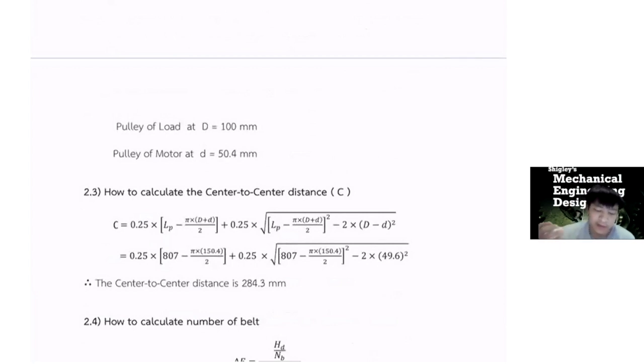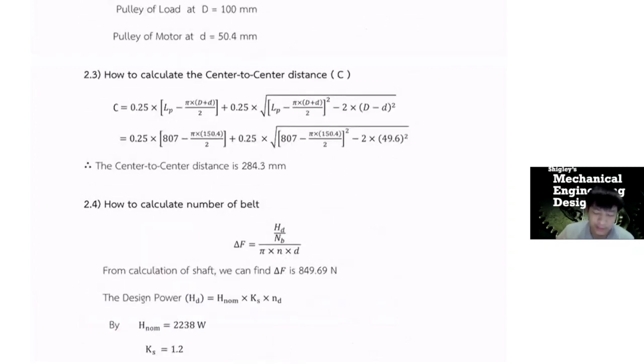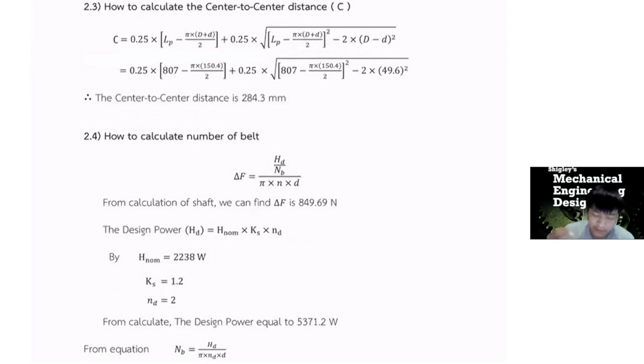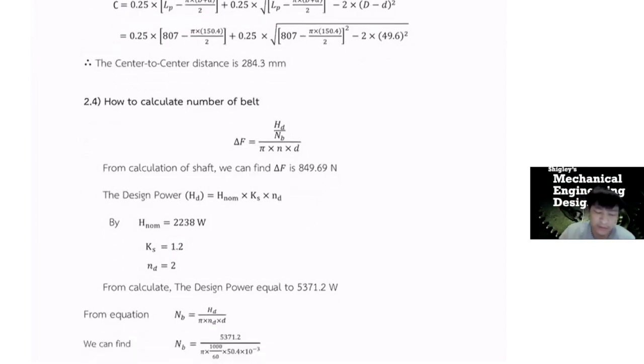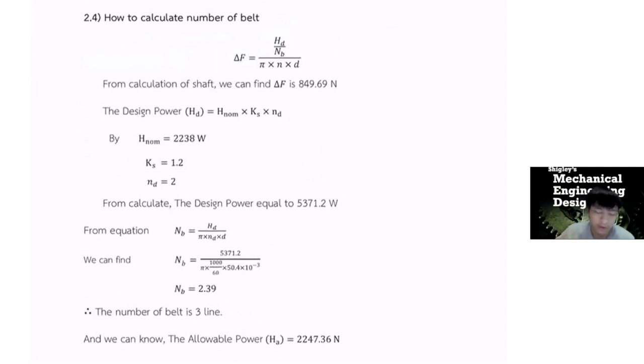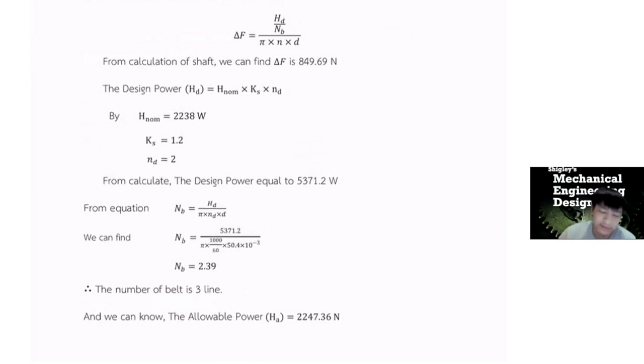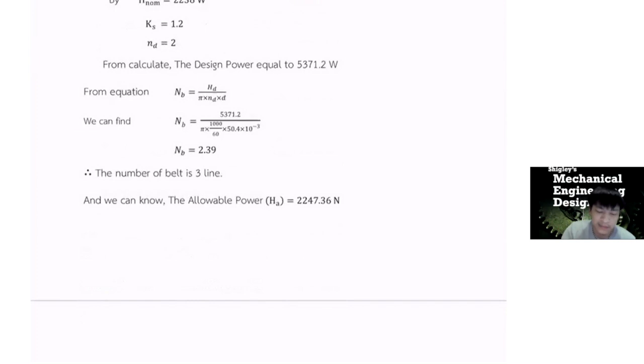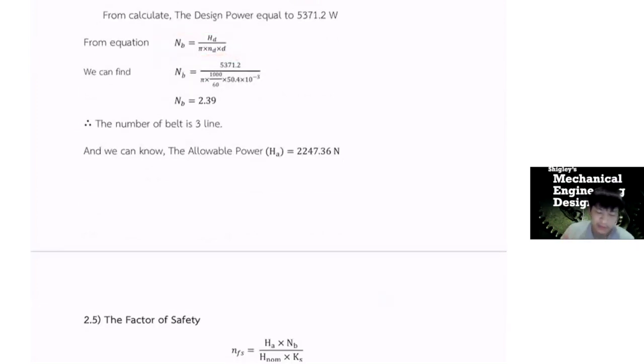Therefore, we have the pulley of load, the diameter of the motor at 50.4 millimeter. Therefore, we can calculate center to center distance. The distance C is from this equation and the center to center distance is 284.3 millimeter. And now we can calculate the number of belt works per belt by this equation. We define head norm equal is about 2200 and Ks 1.2 and ND for the 30 design is 2. And we can calculate the number of belt by this equation. Finally, the number of the belt we use is the three line.